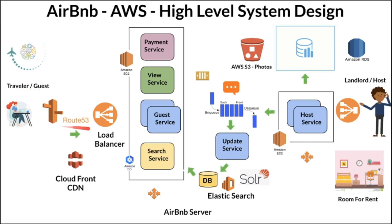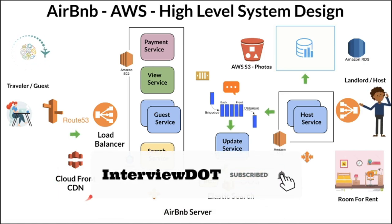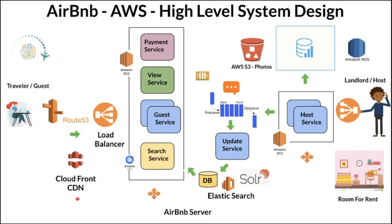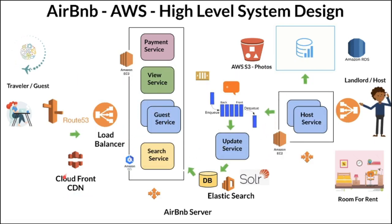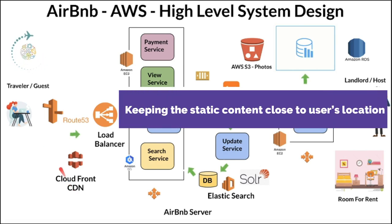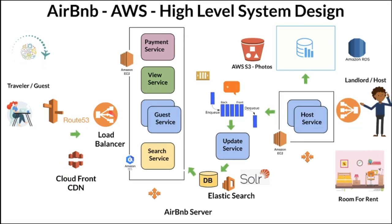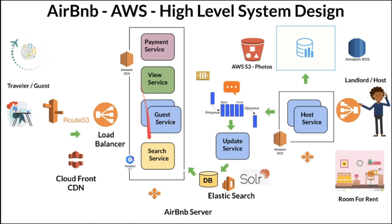On the other side, the traveler is going to connect to the system using Route 53, which is a domain name system, and then connect to CloudFront, which is a CDN — content delivery network. CDN helps to keep the static content closer to the user's location so that it can increase the performance of the application. To handle user traffic I shall use the load balancer so that it can distribute the traffic to different services. Different types of services are running inside EC2, or we can also use Kubernetes to manage the microservices.